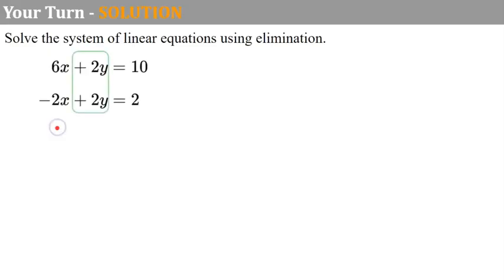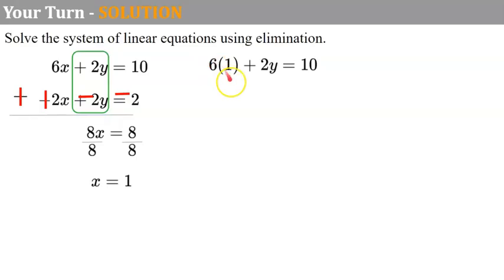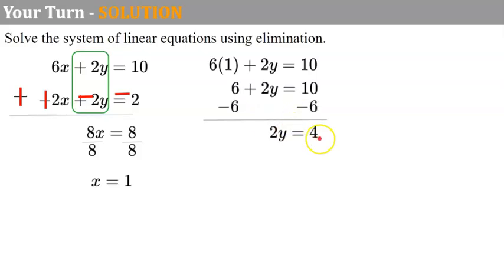Welcome back. We're going to look at our coefficients. 6 and negative 2 are not the same, and then I have 2 and 2 for y — so they are the same. I'm going to subtract. When I subtract, I'm going to add the opposite to all the terms in the second equation — so add, opposite, opposite, opposite. 6x and 2x are 8x; 2y and negative 2y are 0; 10 and negative 2 are 8. Divide both sides by 8 and x is equal to 1. Place x in the first equation with 1: 6 times 1 is 6 plus 2y equals 10. Subtract 6 from both sides and 2y is equal to 4. Divide both sides by 2 and y is equal to 2.